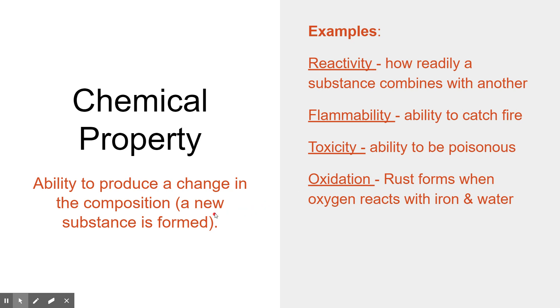And then there's also chemical properties. Chemical properties are the ability to produce a change in composition. A new substance is being formed. So these are properties that have the ability to change the composition of something, change what something's made up of. And so reactivity, how things react. When things chemically react together, a new substance is formed. So how reactive something is. Flammability, the ability to catch fire. Toxicity. When something is poisoned, it changes the makeup of it. Oxidation, rust being formed. When oxygen reacts with iron, it forms rust.